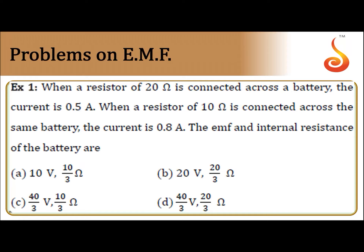Problems on EMF, example number one. When a resistor of 20 ohm is connected across a battery the current is 0.5 ampere. When a resistor of 10 ohm is connected across the same battery, current is 0.8 ampere. Find the EMF and internal resistance of the battery. Options are: 10 volt 10/3 ohm, 20 volt 20/3 ohm, 40/3 volt 10/3 ohm, or 40/3 volt 20/3 ohm.